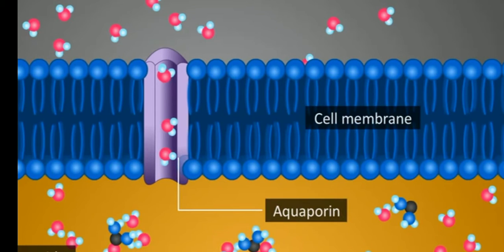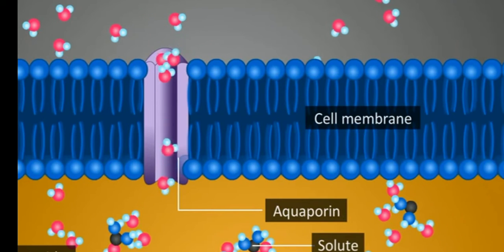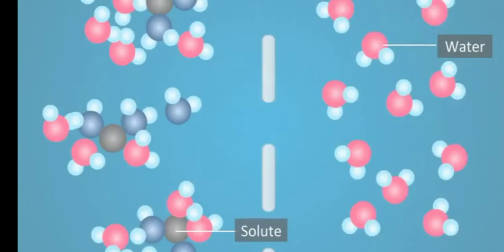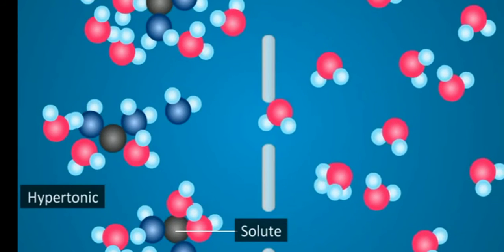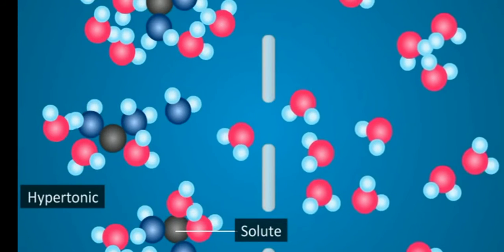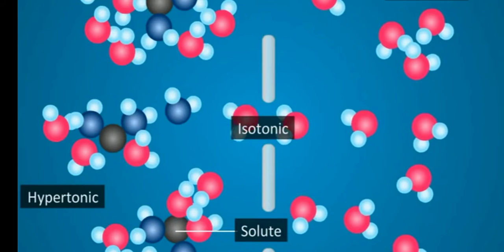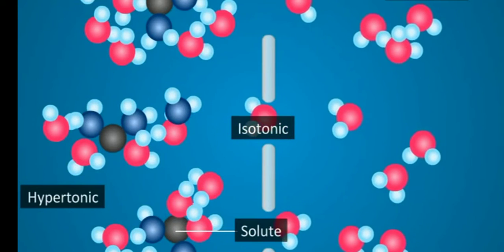This process continues till solutions at both sides of cell membrane have the same osmotic pressure. At this stage there is no further osmosis. Such solutions having the same osmotic pressure at same temperature are called isotonic or isomotic solutions.